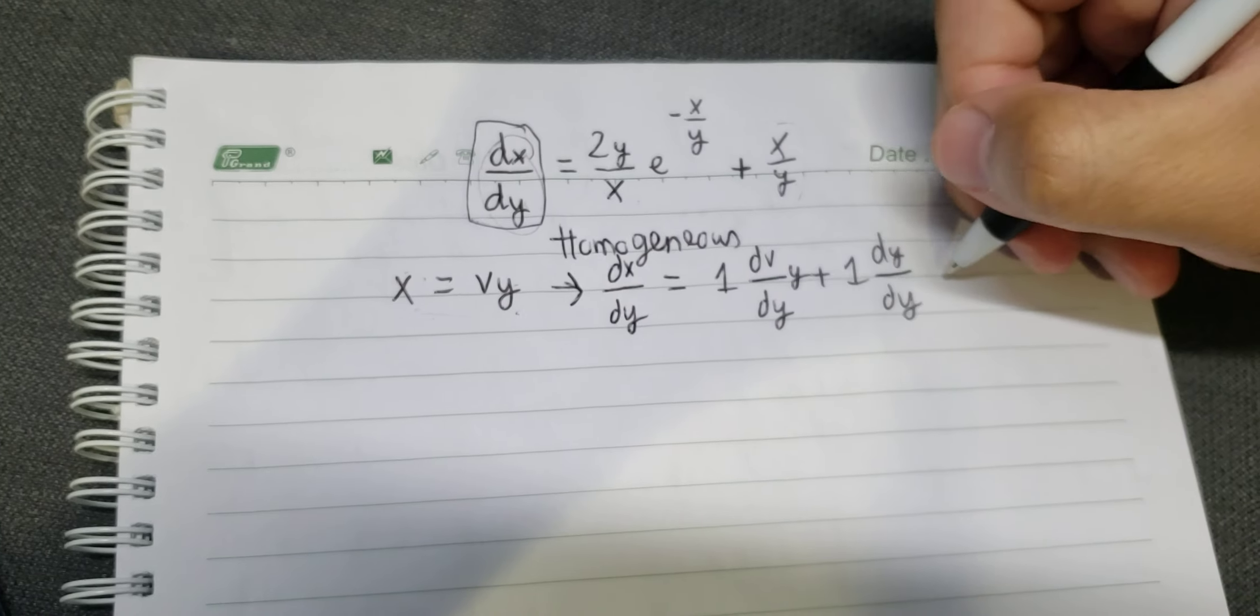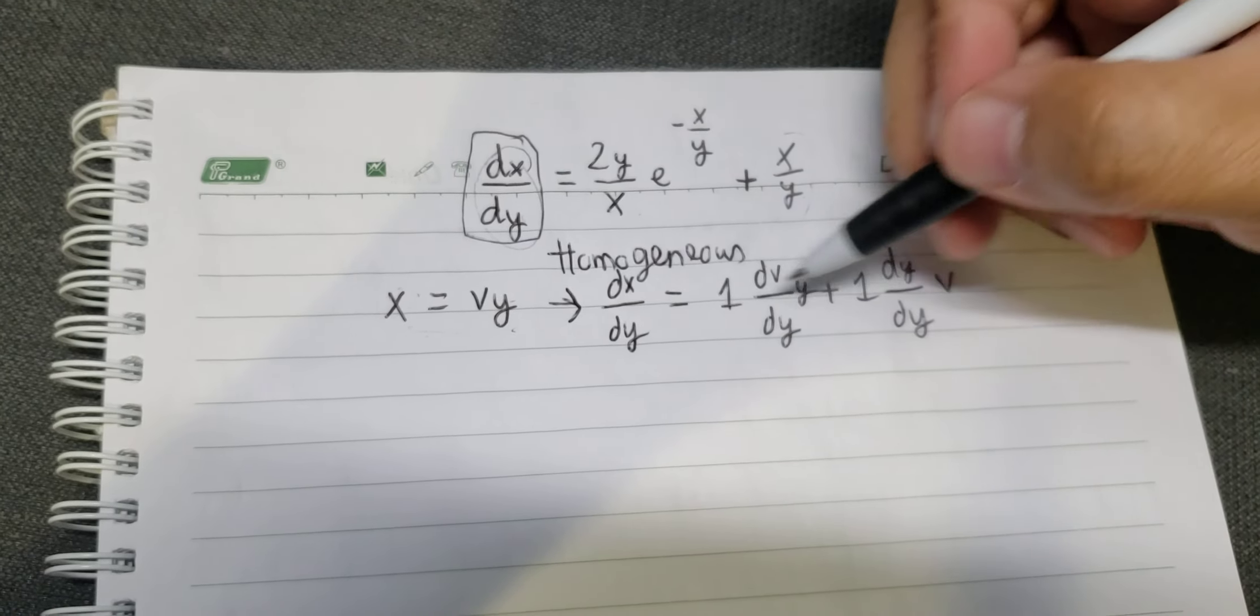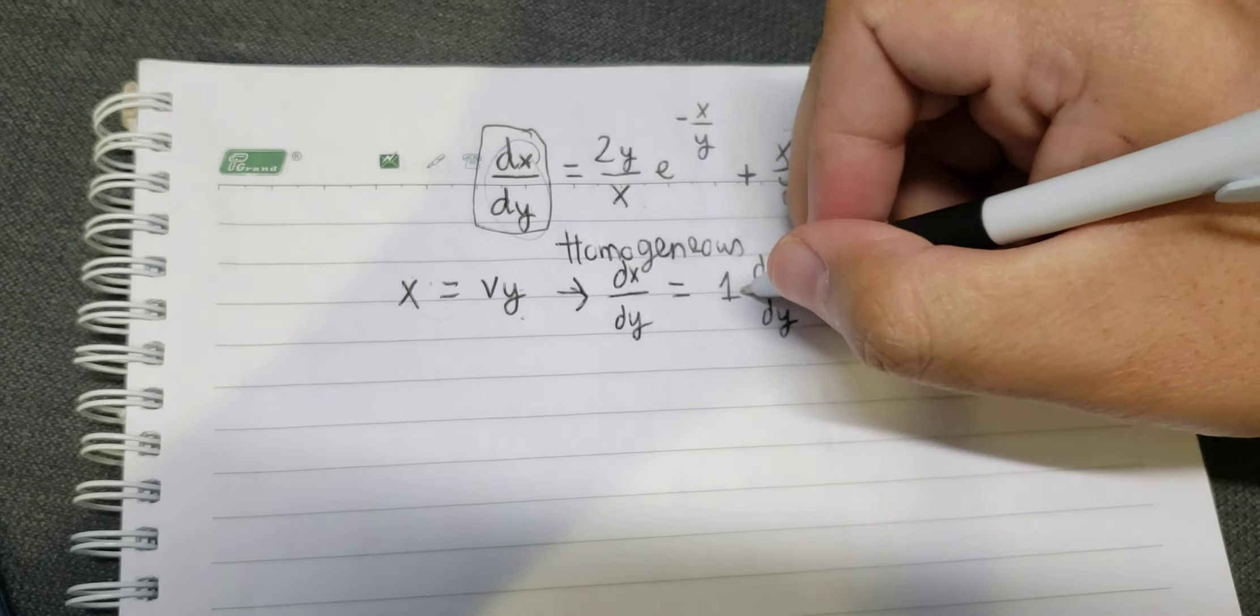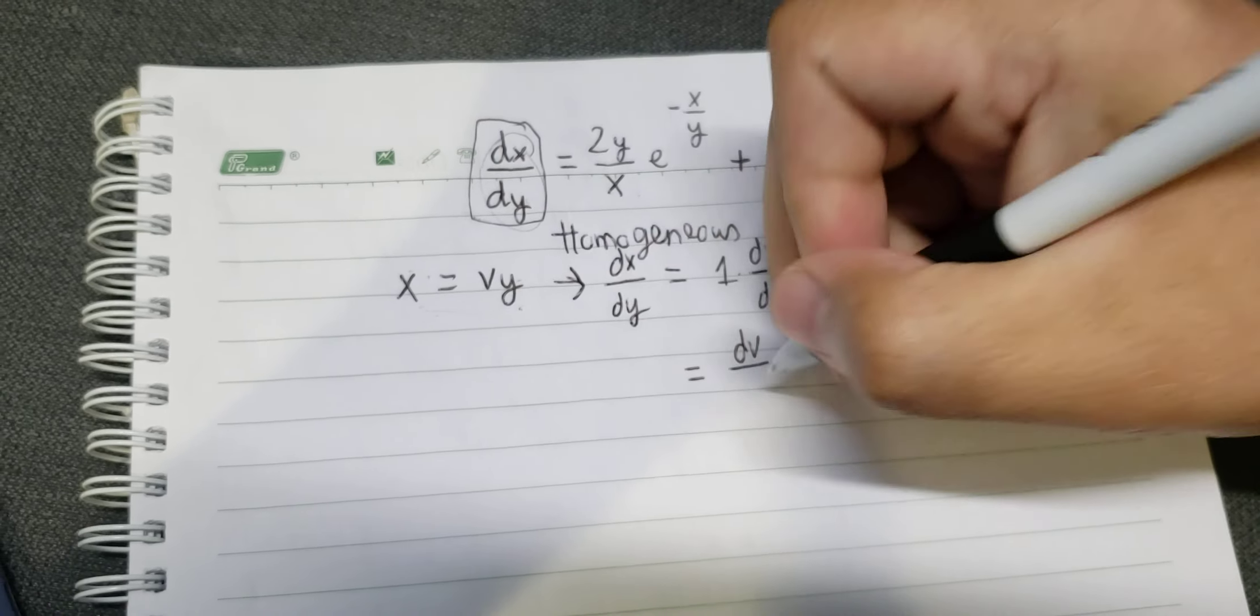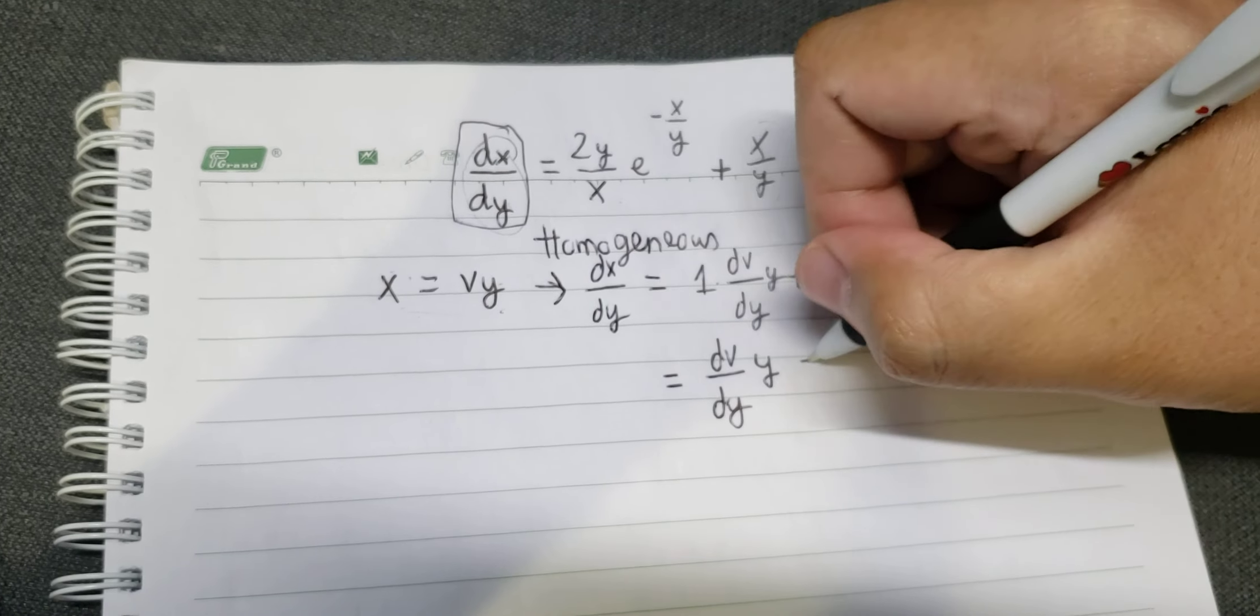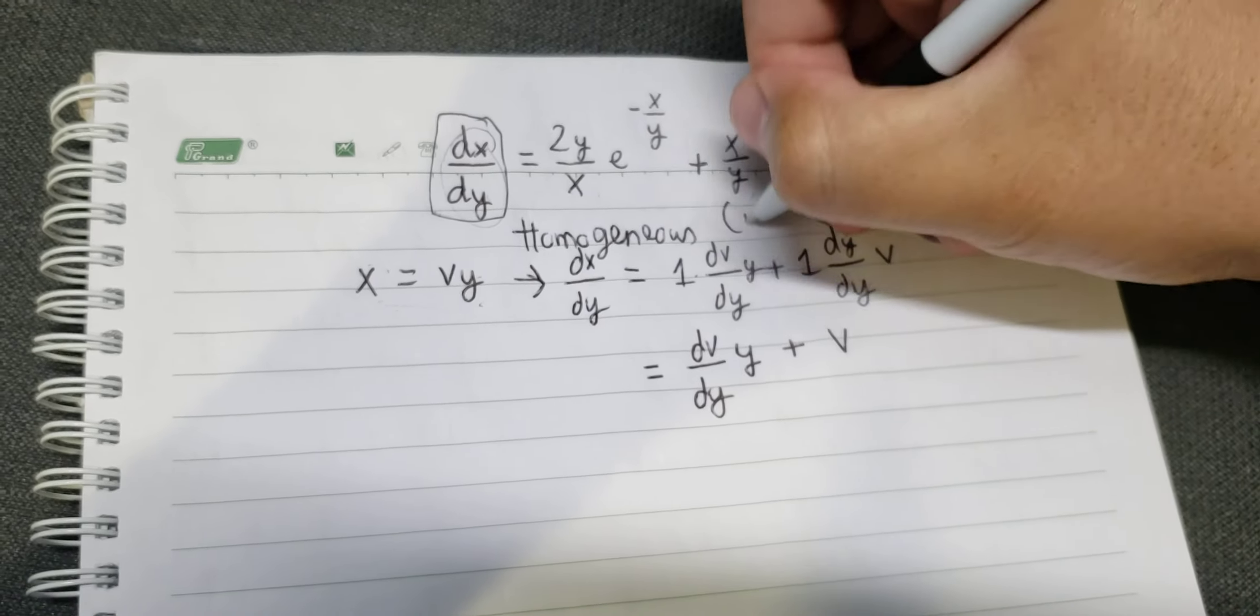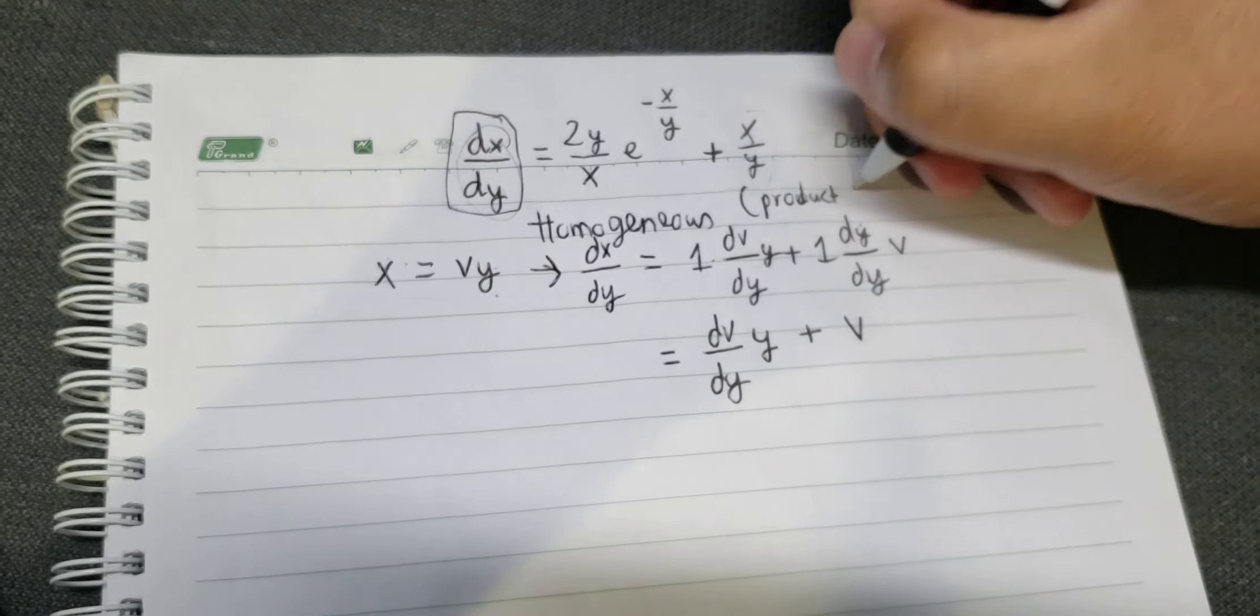We have y here and v here. Since dy/dy equals 1 and this equals 1, we can simplify like this. That's the product rule of derivatives.